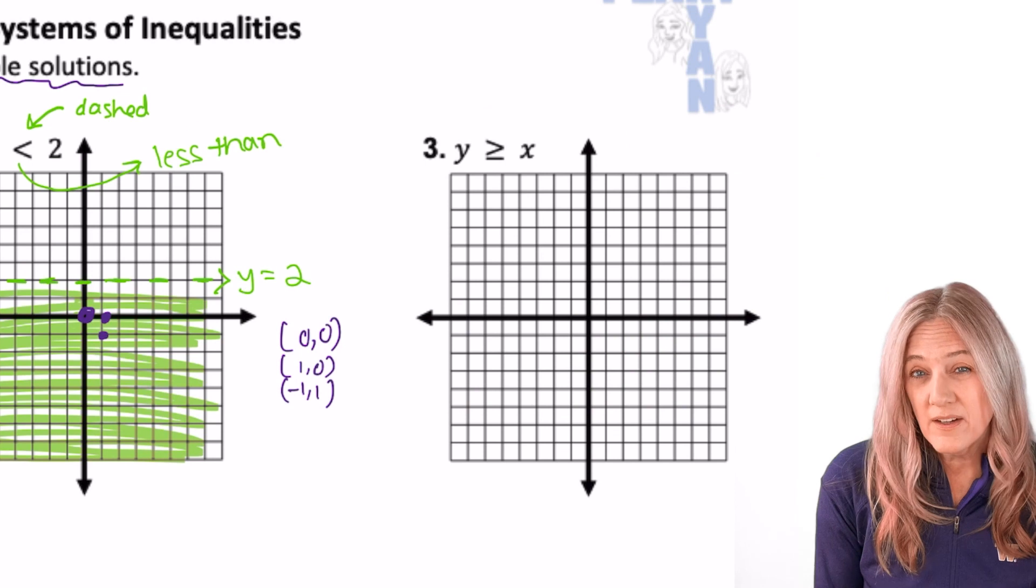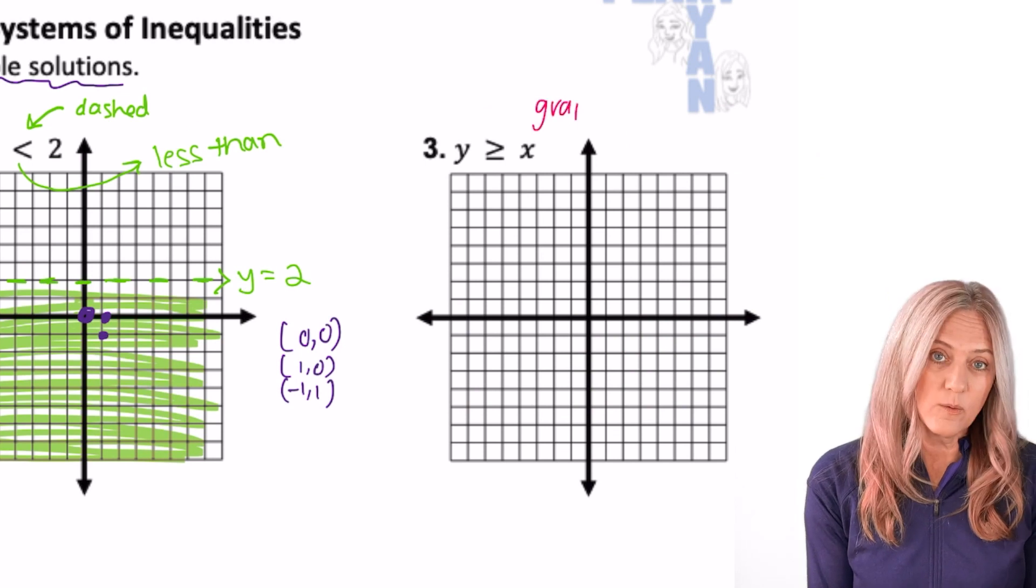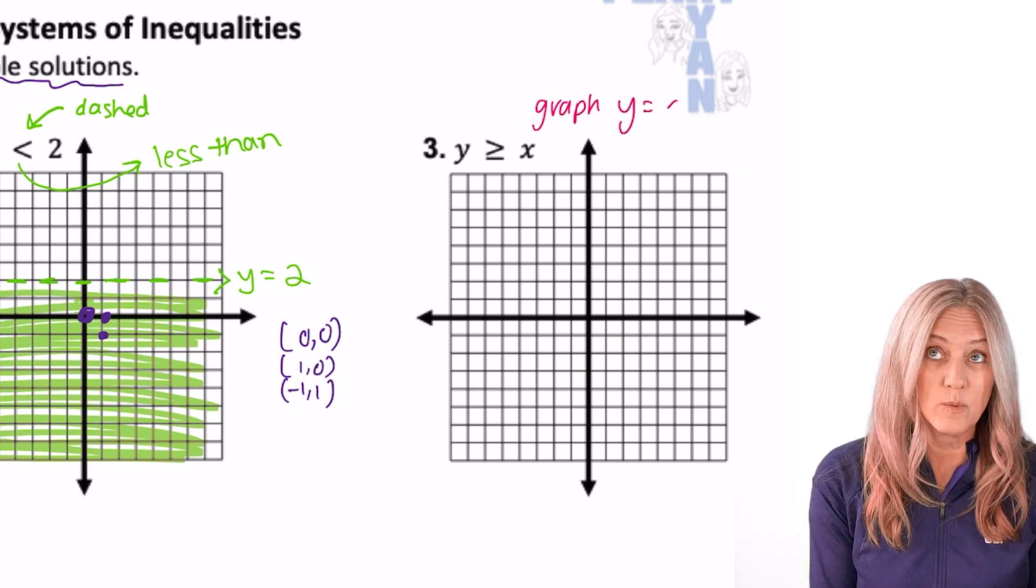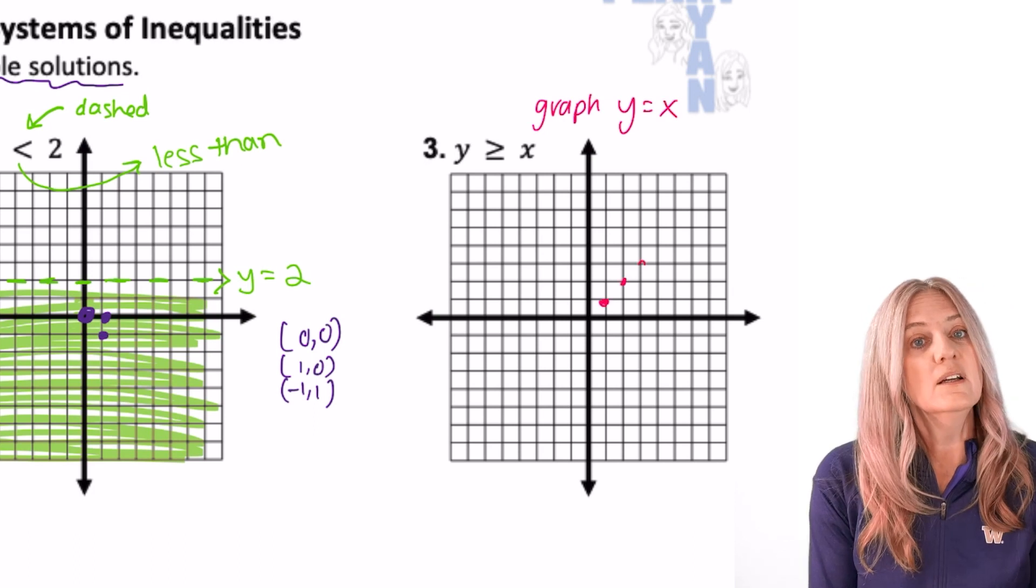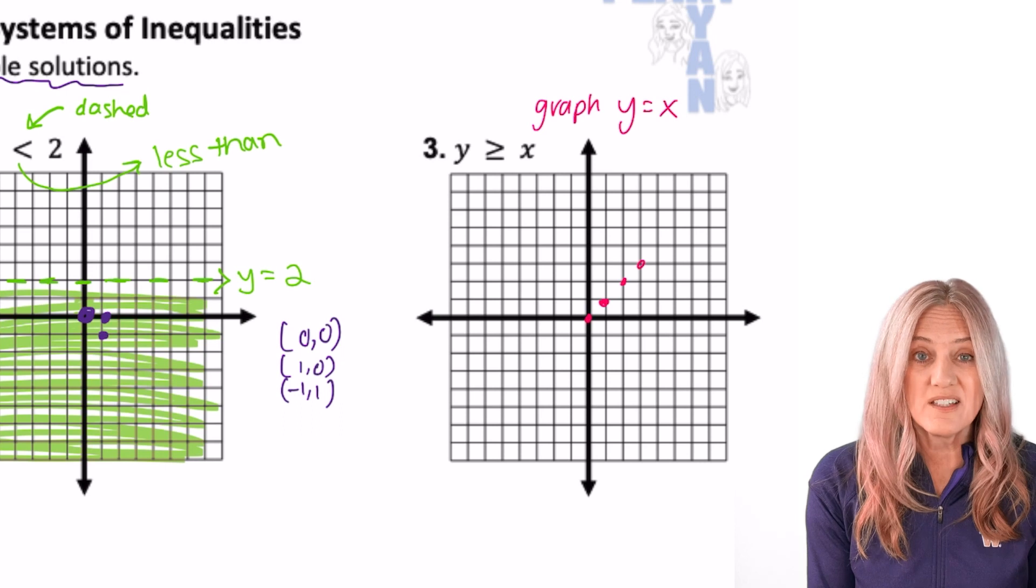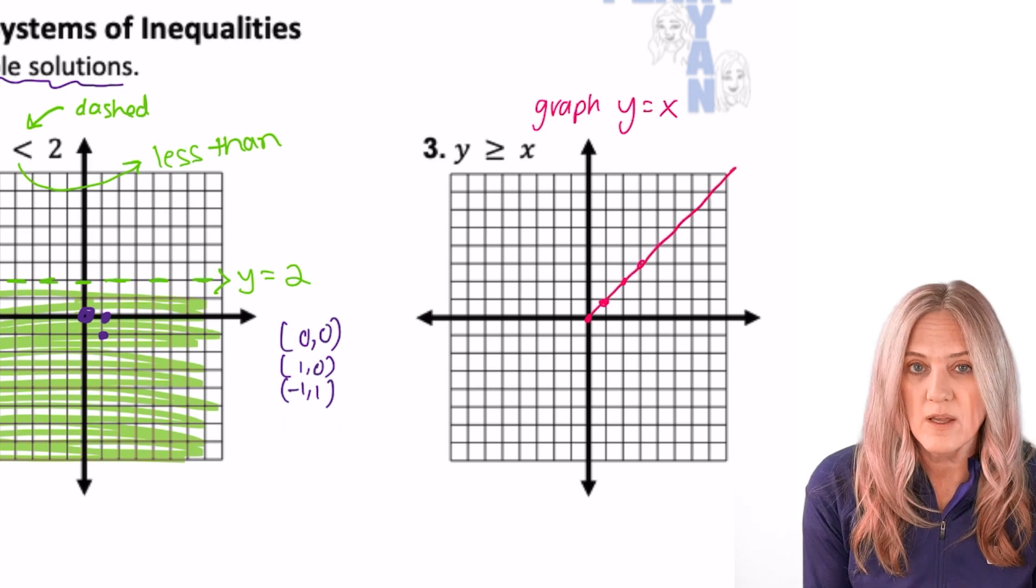y greater than or equal to x. Let's start by graphing the line y equals x. Y equals x. Well, when x is 1, y is 1. When x is 2, y is 2, and so on. It will be a solid line because it does say greater than or equal to.